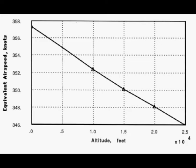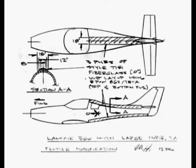The flutter boundary, or 75% of the critical flutter speeds for various altitudes, are shown for the Landseer 4. A fix for a flutter problem on the Landseer 360 with the big tail is also shown.